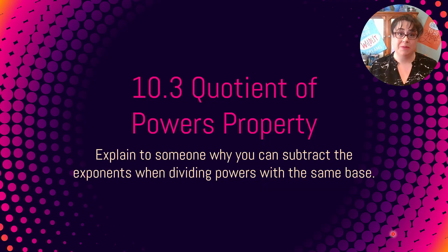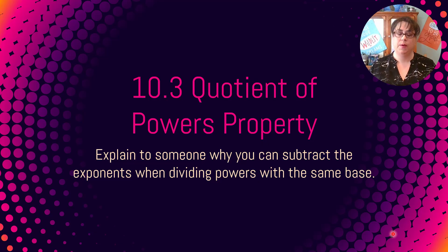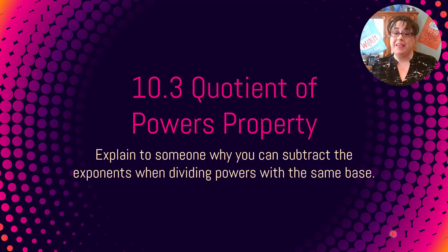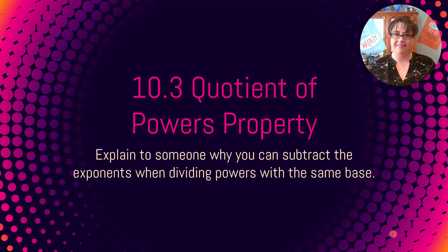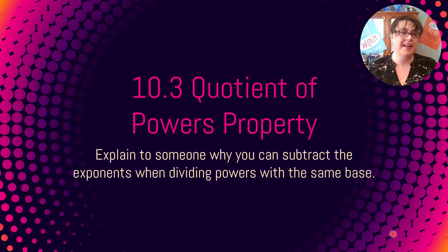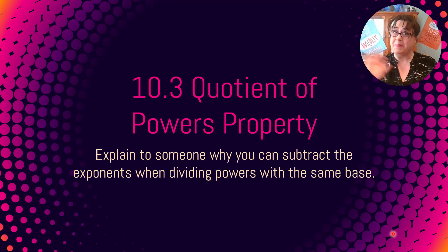That's it for the Quotient Property — it has only one thing to remember, unlike the product properties which had several. Remember to be able to explain why you can subtract exponents when dividing powers with the same base: it all comes down to the fact that a number over itself reduces to one. I can't wait to see you in the next lesson — be kind to one another, because we can all use some extra kindness. Bye for now.